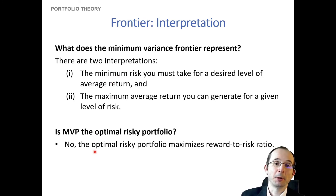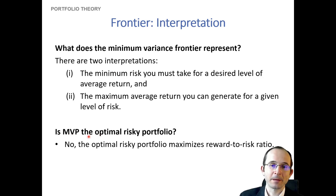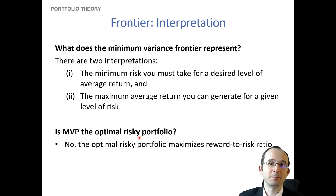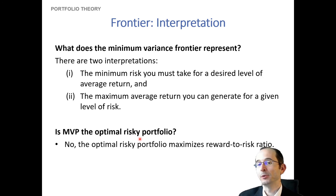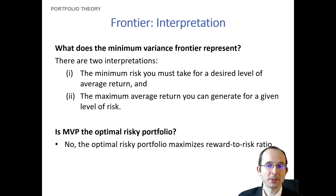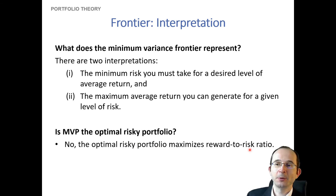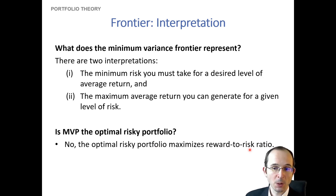It's important to remember that the minimum variance portfolio is not actually the optimal risky portfolio — it just minimizes the amount of risk you take. The optimal portfolio is the one that maximizes your reward-to-risk ratio — the Sharpe ratio — the one that gives the most positive slope of the capital allocation line.